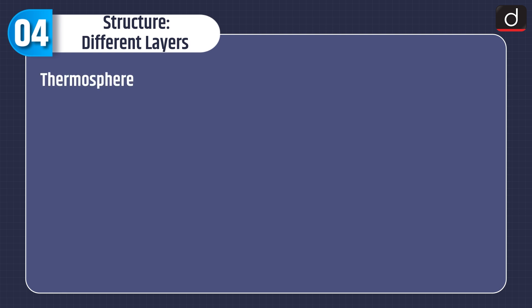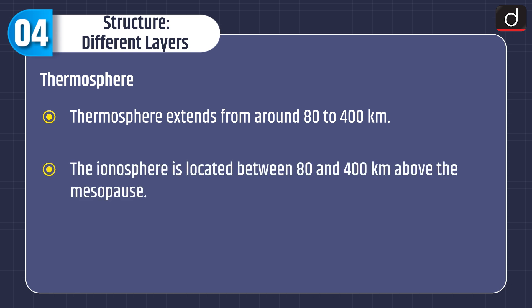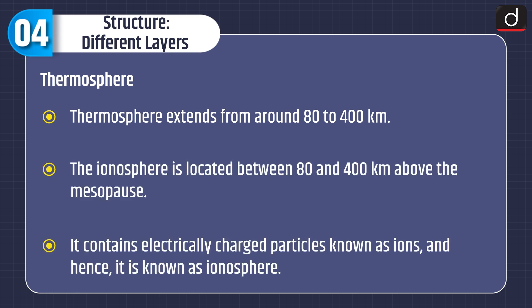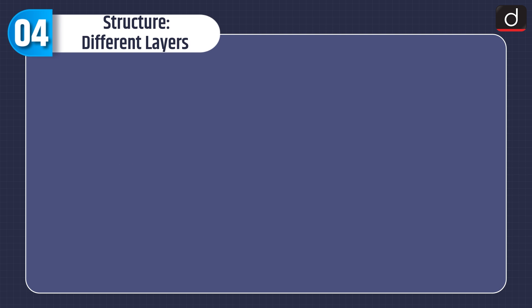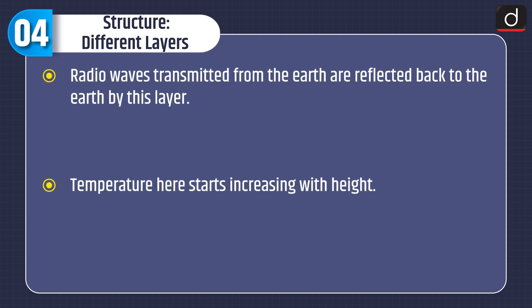Next is the thermosphere. The thermosphere extends from around 80 km to 400 km. The ionosphere is located between 80 and 400 km above the mesopause. It contains electrically charged particles known as ions, and hence it is also known as the ionosphere. Radio waves transmitted from the earth are reflected back to the earth by this layer. Temperature here starts increasing with height.